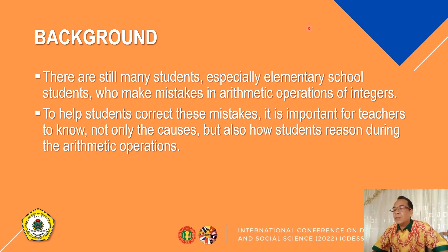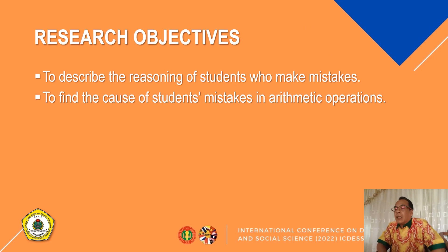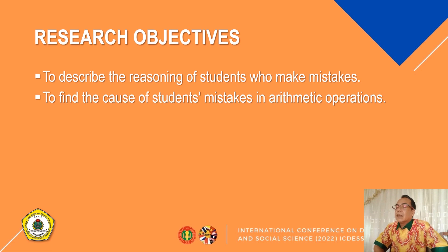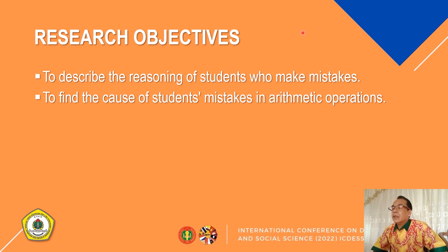To help students correct these mistakes, it is important for teachers to know not only the cause but also how students reason during arithmetic operations. Therefore, our research has two objectives: first, to describe the reasoning of students who make mistakes in arithmetic operations, and second, to find the cause of these mistakes.